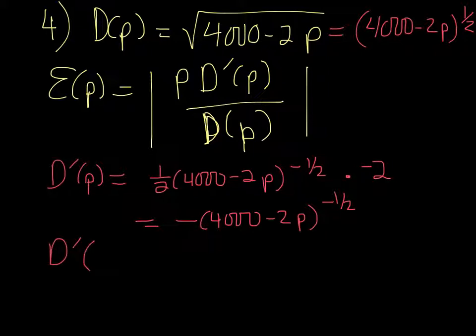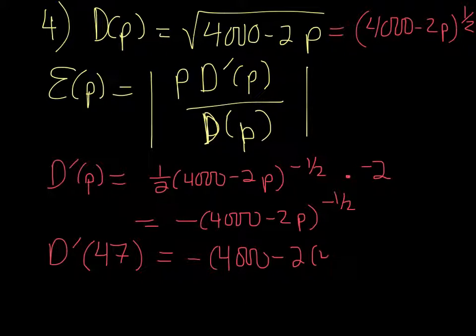And to simplify that, -2 times 1/2 is just -1. So we get -(4000 - 2p)^(-1/2). And then we're going to go ahead and plug in the price that we're given, the $47.